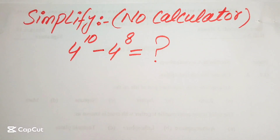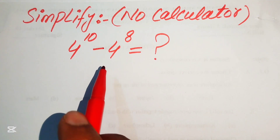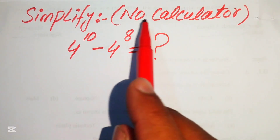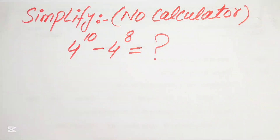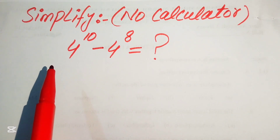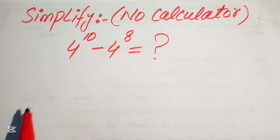Hello everyone. How to simplify this nice algebraic expression: if we have 4 to the power of 10 minus 4 to the power of 8, we write this into simplified form. Note that a calculator is not allowed in this problem — we will show all of the working on paper, or you can do all of the working in your head.